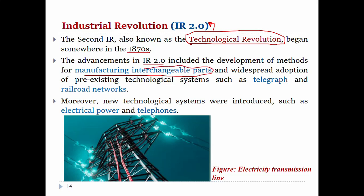Industrial Revolution is a special part of history. In Industrial Revolution 1, the machine was a special part. In Industrial Revolution 2, the machine continued to be a central and special part of development.